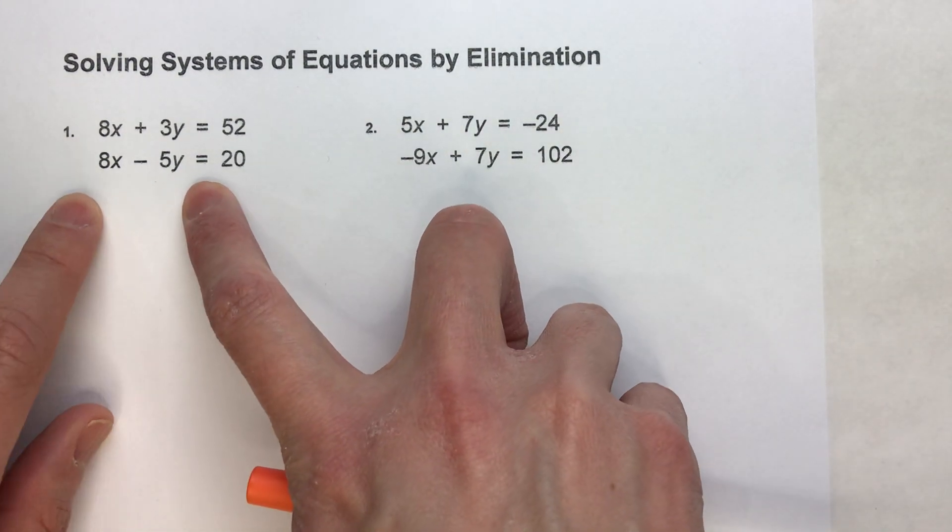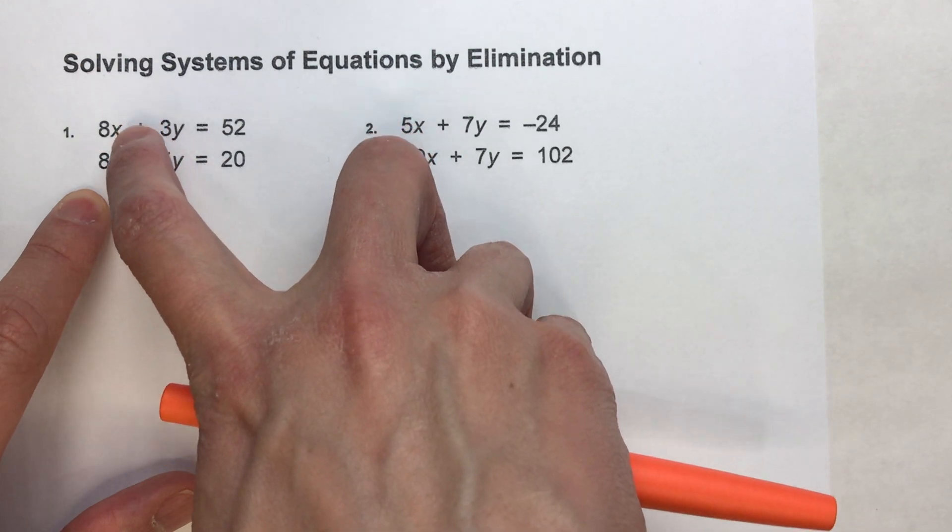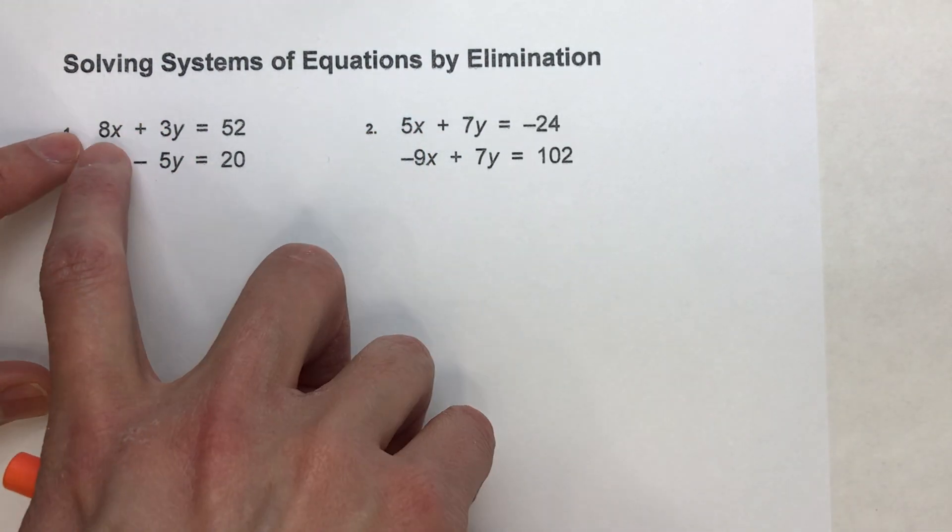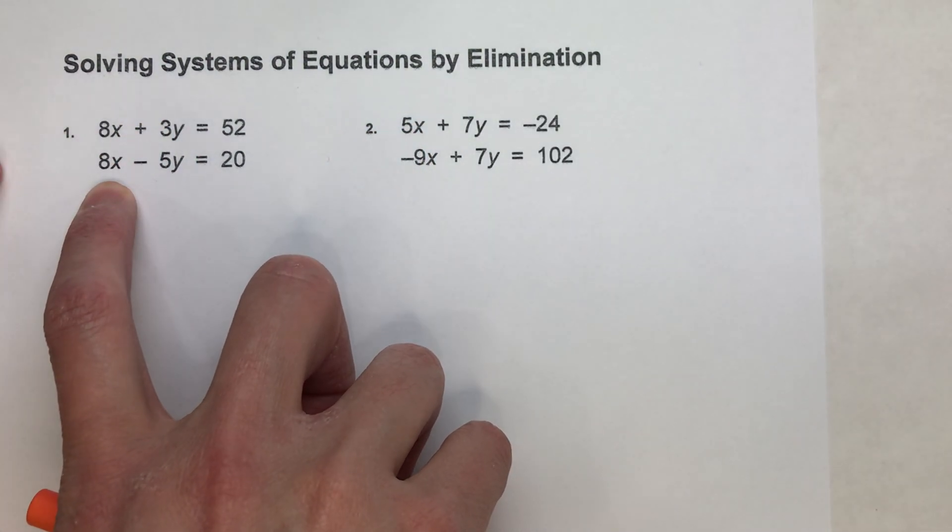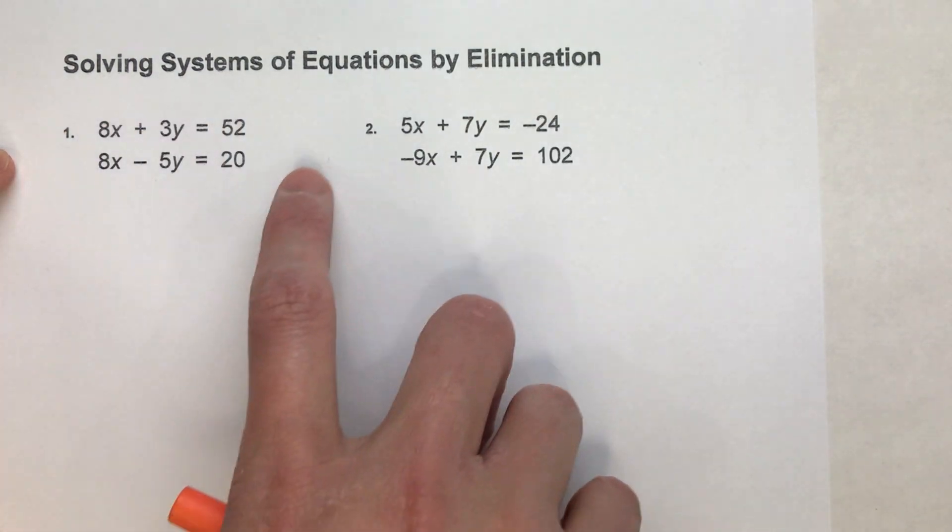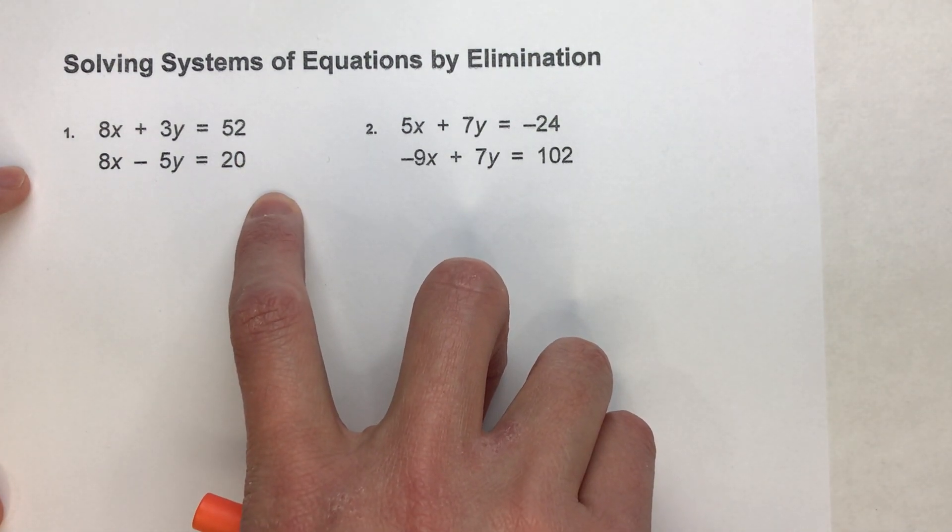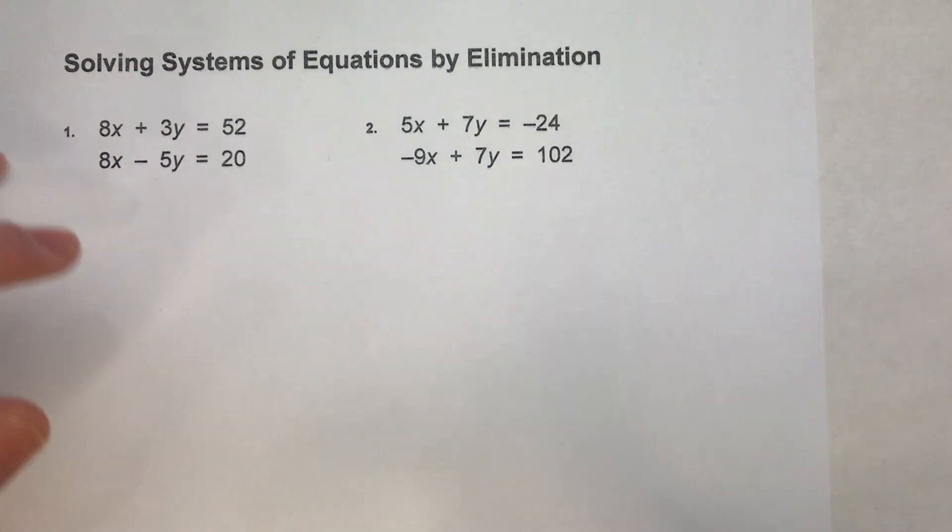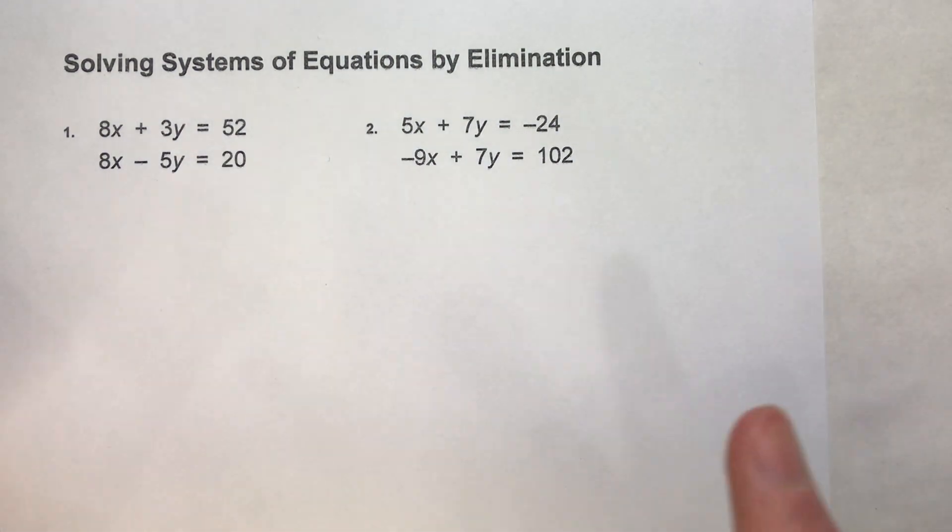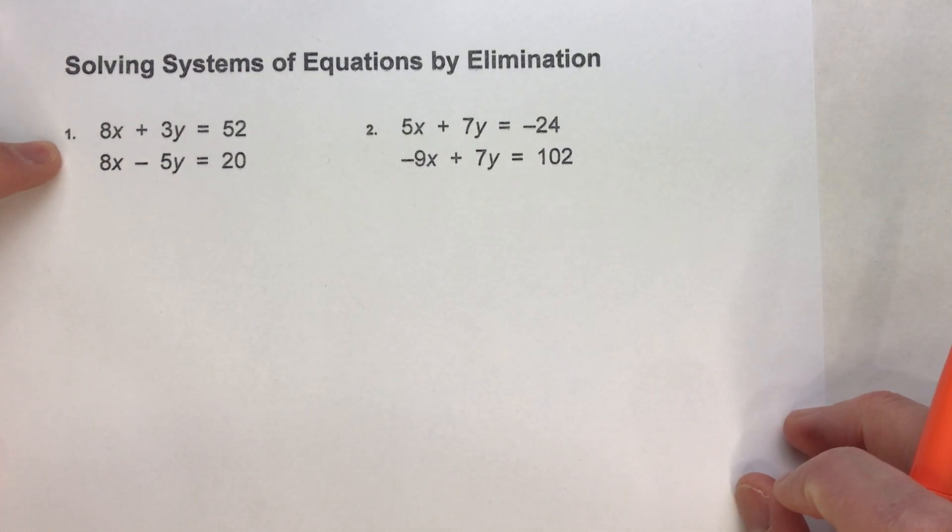However, if you look here, notice I have the exact same number of x's. I have 8x's on the top and 8x's on the bottom. So if I want to eliminate any of the variables here, I can easily eliminate the x's by simply subtracting the equations. So I could subtract both equations and eliminate my x's, but I'm going to show you a different way.